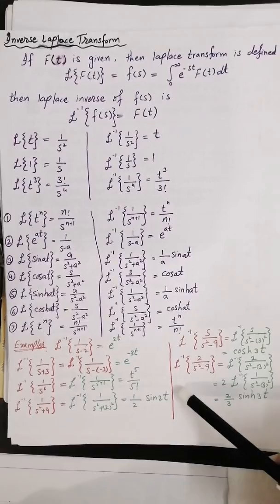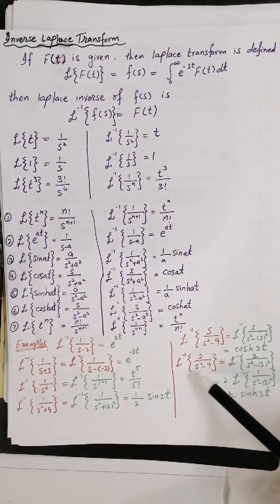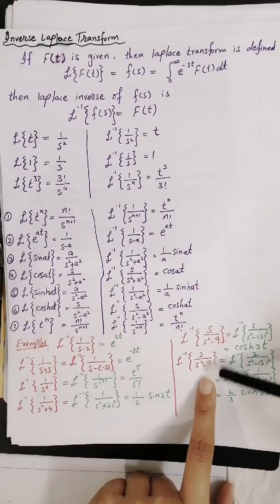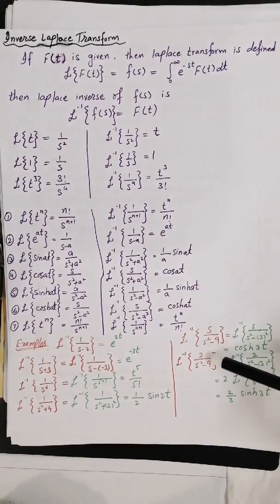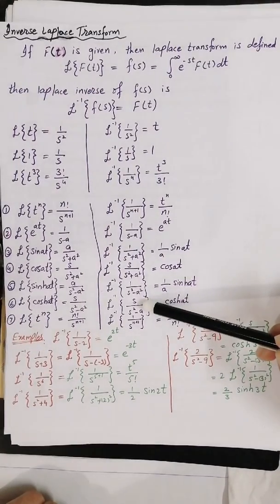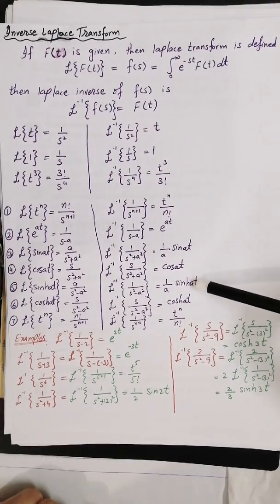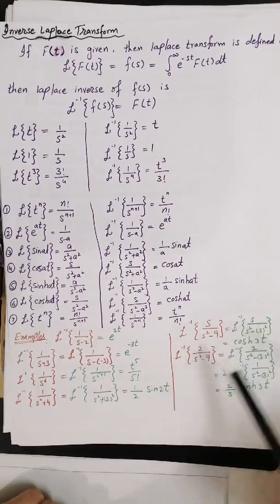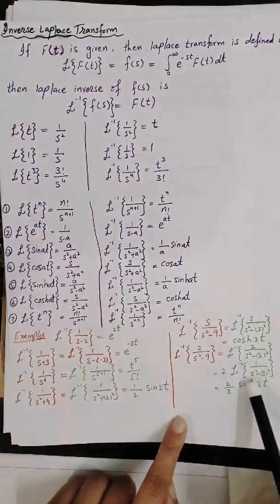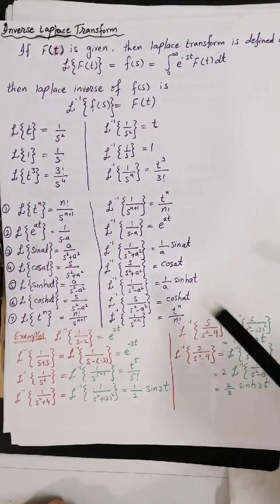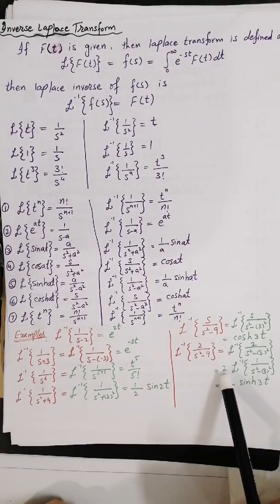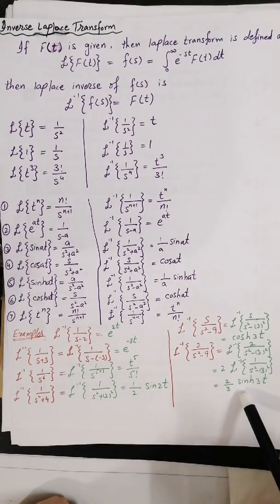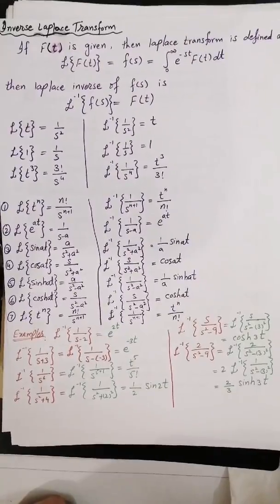For the Laplace inverse of 2 over (s² minus 9), we write s² minus 9 as s² minus 3². This matches the formula for 1 over (s² minus a²), which corresponds to the hyperbolic sine formula. So Laplace inverse of 2 over (s² minus 9) equals 2 times 1 over 3 times sinh(3t), which equals 2 over 3 sinh(3t).